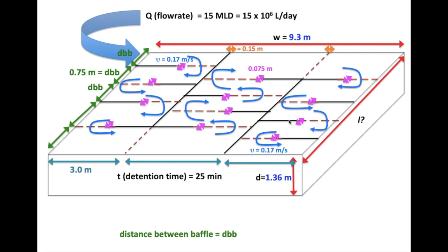We have 1, 2, 3, 4 baffles. You see, baffles is always less than 1 than channel in a compartment.